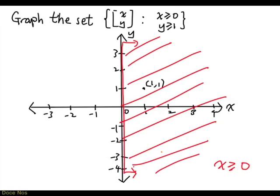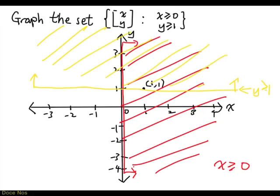What are the points that have y-coordinate greater than or equal to 1? They are precisely all the points that lie on or above this line. This line here is y equal to 1, and so everything on or above it will have y greater than or equal to 1.